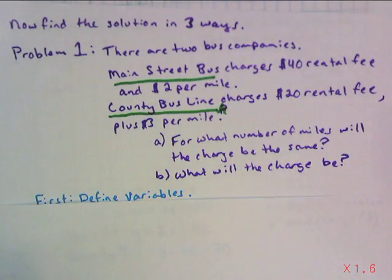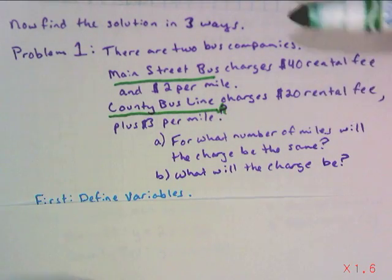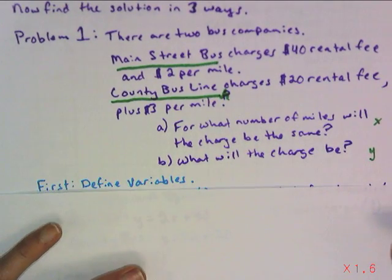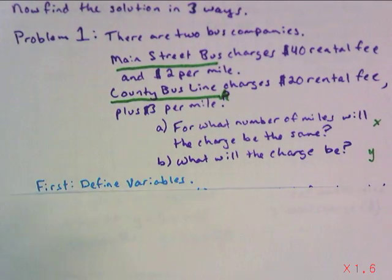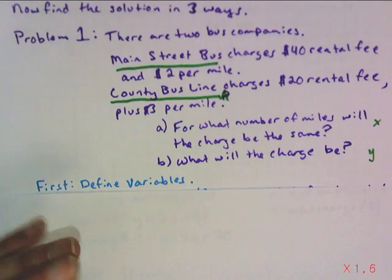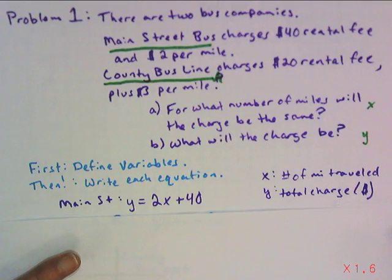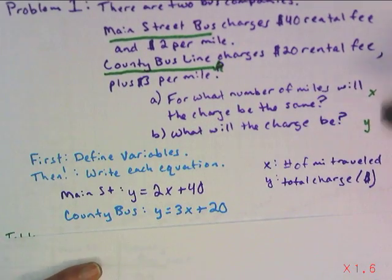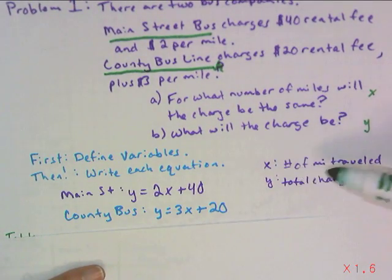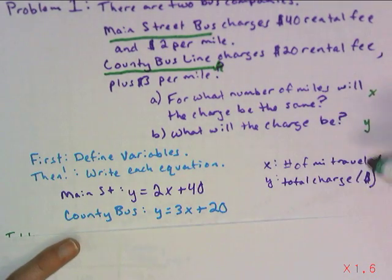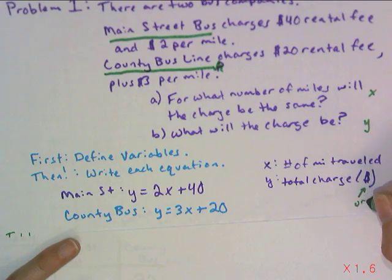This is essentially at what point will these two lines meet up? Because it's context, we're analyzing it in terms of the independent variable and the dependent variable. First, you've got to define your variables. Which one is the independent and which is the dependent? Total charge in money depends on the number of miles traveled. Therefore, x is the number of miles traveled, and y is the total charge in dollars. Don't forget your units.